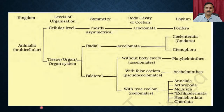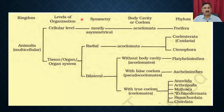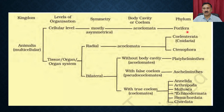We discussed five different criteria used to classify living organisms: level of organization, symmetry, different types of membranes present — diploblastic or triploblastic organization — segmentation, and notochord. Based on these classification criteria, the whole animal kingdom is classified into multiple subphyla and phyla. For example, within Porifera, the organization is at the cellular level, mostly asymmetrical, and acoelomate.